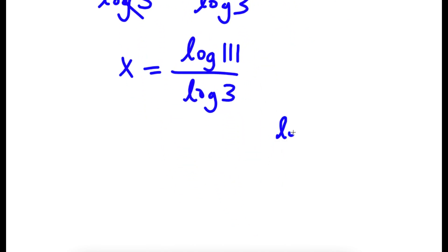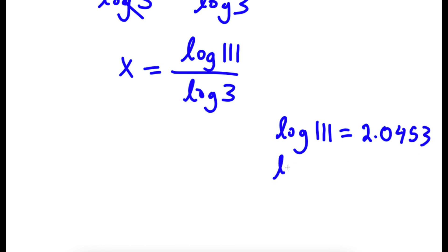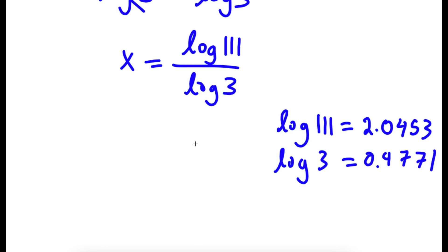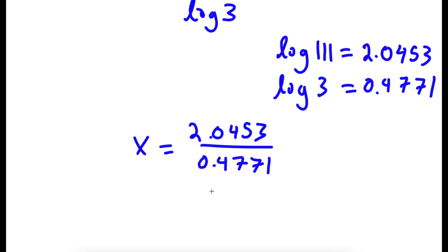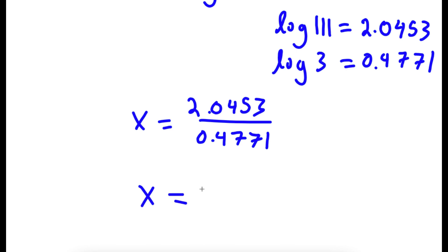Now log 111 is equal to 2.0453, and log 3 is equal to 0.4771. So I have x is equal to 2.0453 over 0.4771, which equals 4.2869.